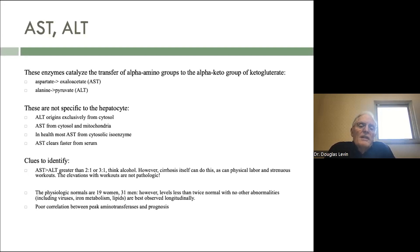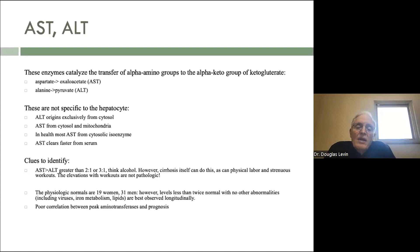The physiologic normals for men and women are really quite different from what your lab probably tells you. The physiologic normals for AST and ALT are 19 for women and 31 for men. If you go up to 25 for a woman or 35 for men, it's probably not a big deal. Levels that are less than twice normal with no other abnormality are best observed longitudinally — you check for viruses, check for iron metabolism, check for lipids to make sure they don't have hyperlipidemia or fatty liver.